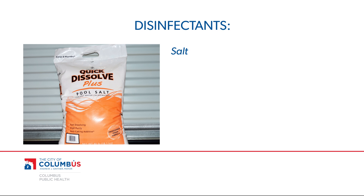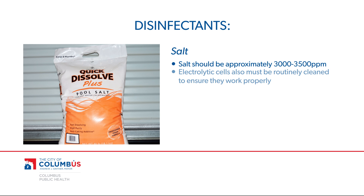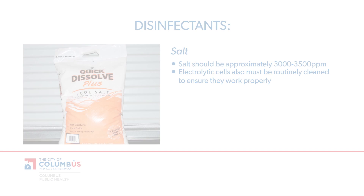To maintain a proper chlorine level, the salt should be approximately 3,000 to 3,500 ppm, a level undetectable by bathers. The electrolytic cells also must be routinely cleaned to ensure they work properly.